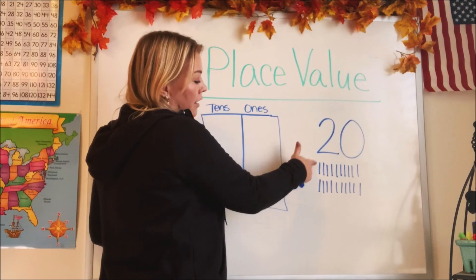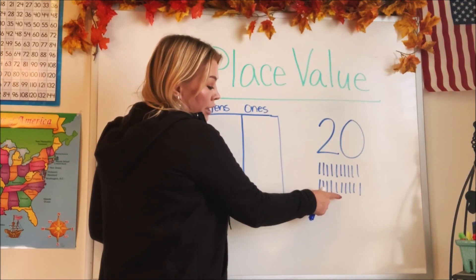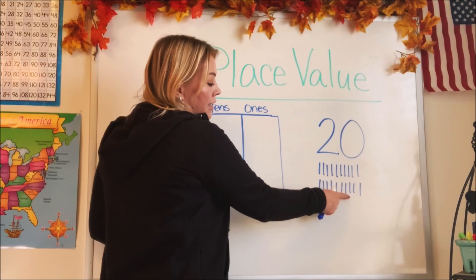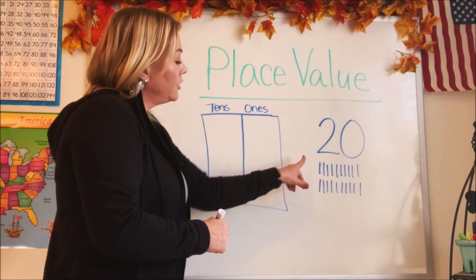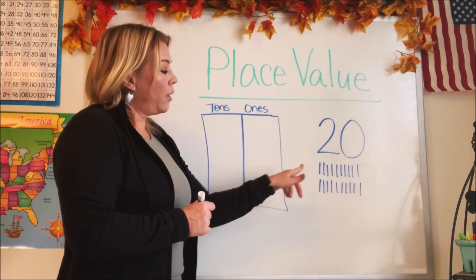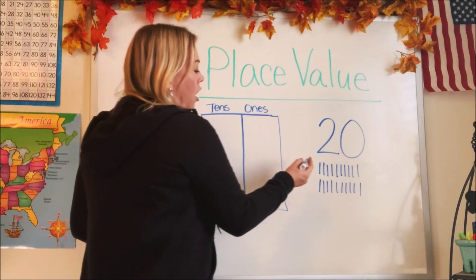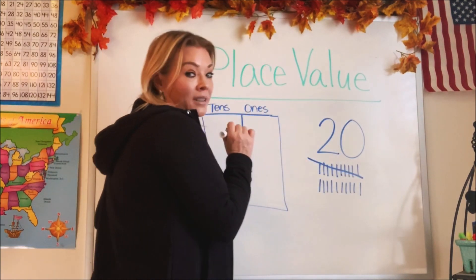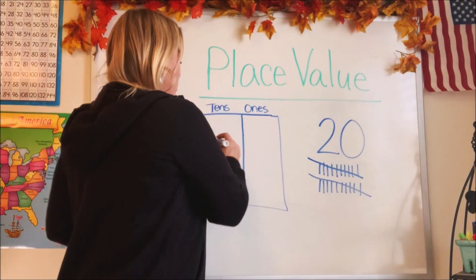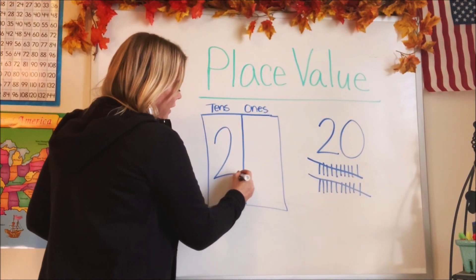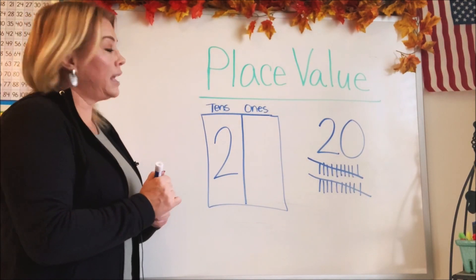So here's one group of 10: 11, 12, 13, 14, 15, 16, 17, 18, 19, 20 — this equals 20. So how many groups of 10 did we have? We had one group of 10 and two groups of 10. So let's write that in our tens column — we had two groups of tens.